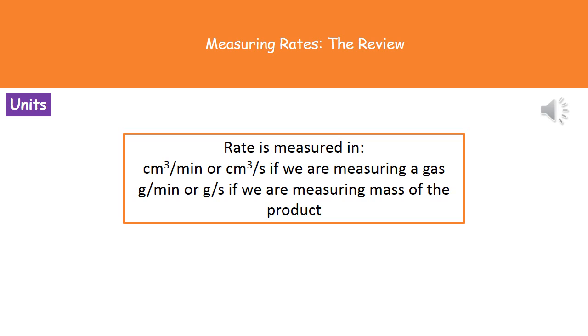The last thing to understand is the units that we're going to use for this rate. Now, depending on what we're measuring, determines what units we're going to use. So if we're measuring a gas, then what we're going to use is centimetres cubed per minute or centimetres cubed per second, depending on the timescales involved. If we're measuring the mass of the product we're making, then that's going to be in grams per minute or grams per second.